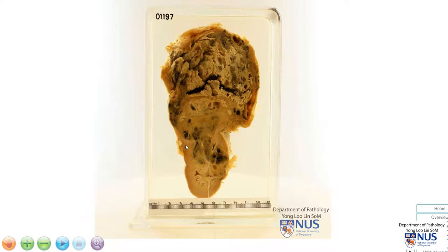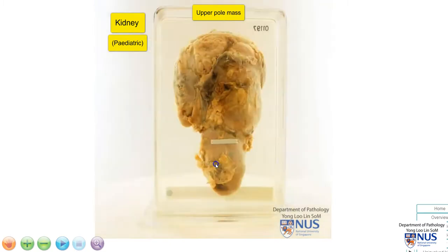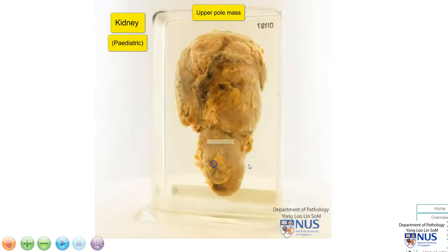Hello, this is a specimen of a kidney with a very large upper pole mass. Looking at the size of this kidney, it is actually relatively small, so this is the kidney of a child. Let's turn this around, and we can see the capsular surface of the kidney here, which appears to be continuous with the location of the mass.